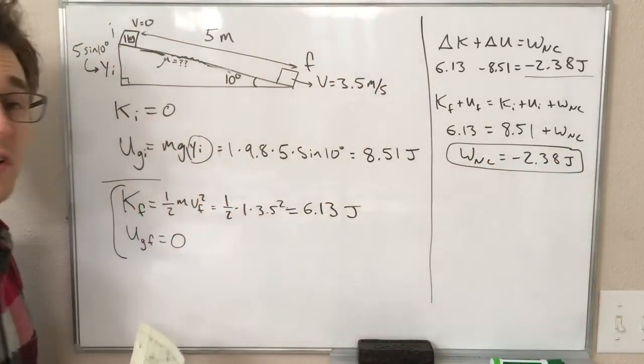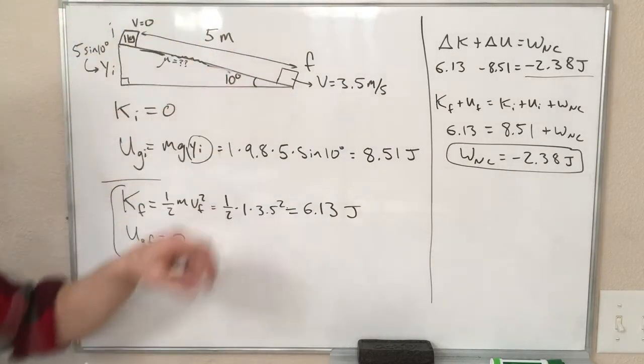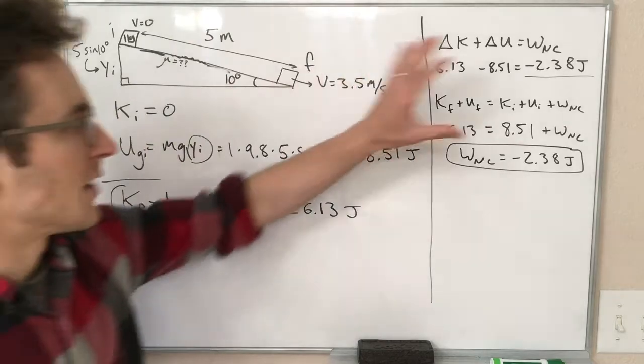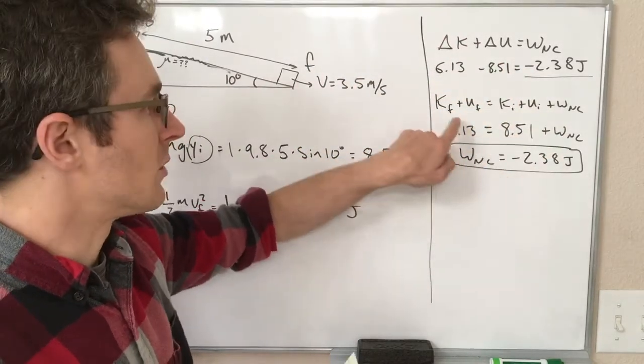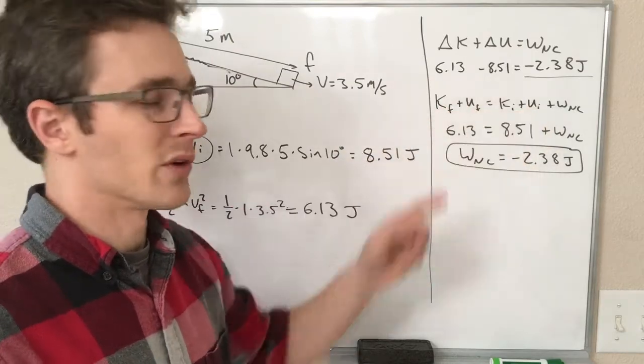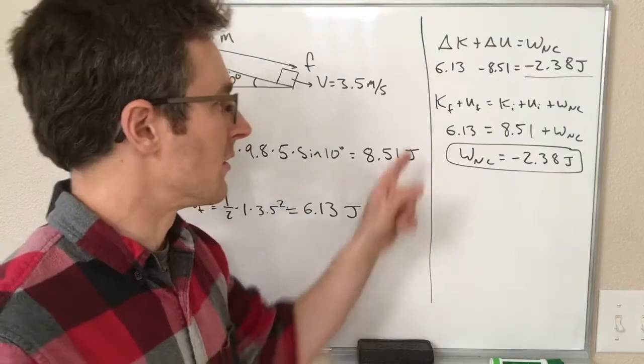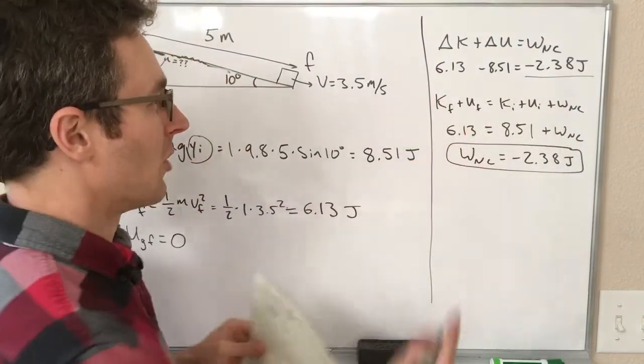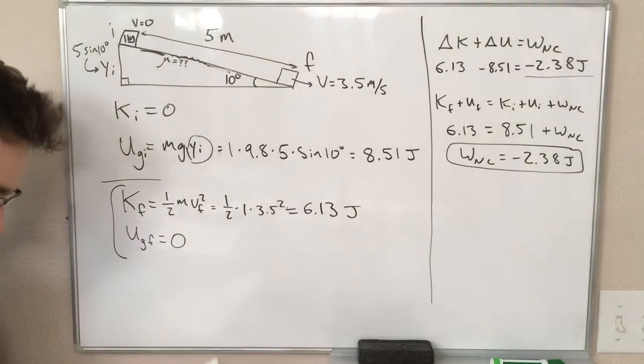So, as long as we've done a good job of identifying how much energy we have at these different points, applying the conservation equation is generally very, very easy. As long as we know what each of these pieces are, solving for whatever the unknown piece is not even hard algebra, right? Because you're just adding or subtracting these to find the non-conservative work. Alright, great.